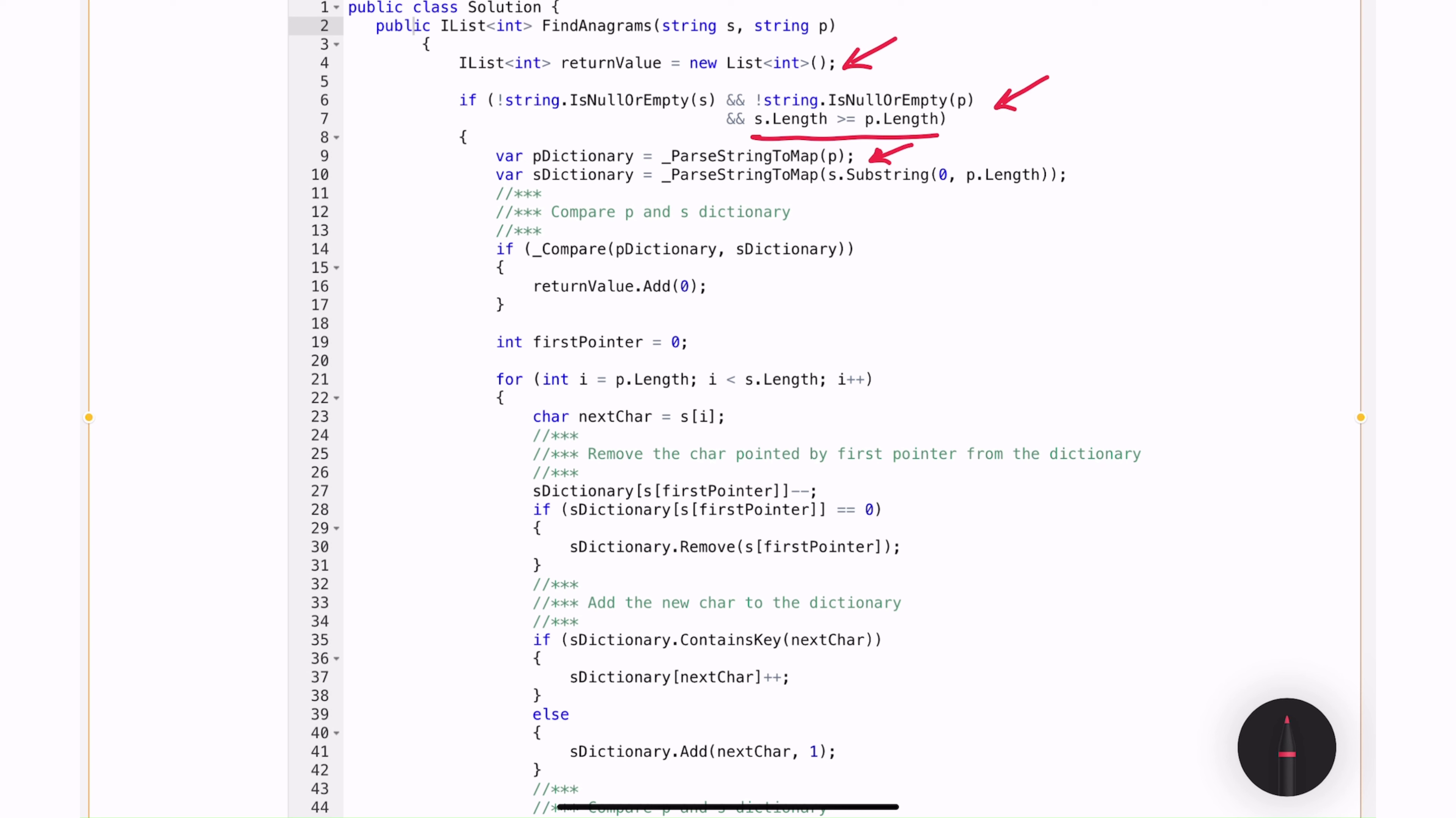The next step is I'm calling this helper method parse string to map, which will convert string to a dictionary of type character and integer. So I'm passing P and in the next line, I am calling the same method, but passing the substring of S starting from 0 to the length of P. So it will get me the first three characters based on the example that we talked about earlier. The next step is to compare the first two maps that we built. So the P dictionary and the first set of characters from S. If the two dictionaries are equal, we will add the index 0 to the return value variable. The next step is to start the for loop. In the for loop, I am extracting the next character that we need to add to the current string. This first pointer variable will hold the pointer for the character that needs to be removed.